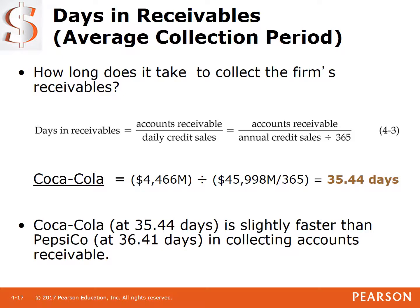How long does it take to collect the firm's receivables? We take accounts receivable divided by our daily credit sales. Daily credit sales are determined by taking all credit sales for the year and dividing by 365 days. So we take Coca-Cola's accounts receivable balance of $4,466 million and divide it by their average daily sales. That's their annual sales — assuming all on credit — of $45,998 million, divided by 365 days. The accounts receivable comes off the balance sheet; the $45,998 comes off the income statement.